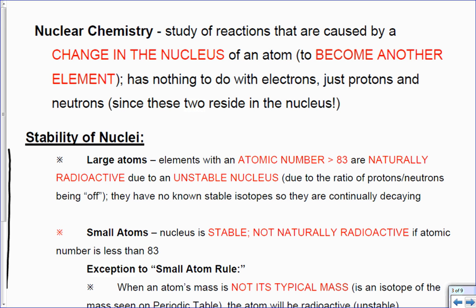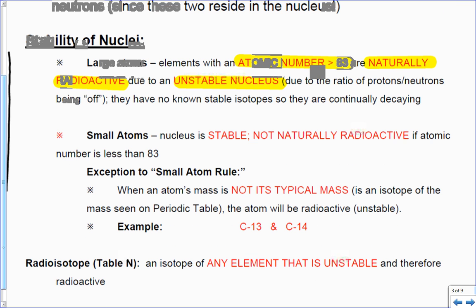Nuclear chemistry is caused by a change in the nucleus of an atom to become another element. Remember the elements are defined by the number of protons that are there, so if I add a proton I've changed the element effectively. Stability: large atoms with an atomic number greater than 83 are naturally radioactive due to an unstable nucleus. There's just too many big pluses in there, and remember pluses are going to repel with another plus. When I get up to about 83, that's about as many as they can handle.